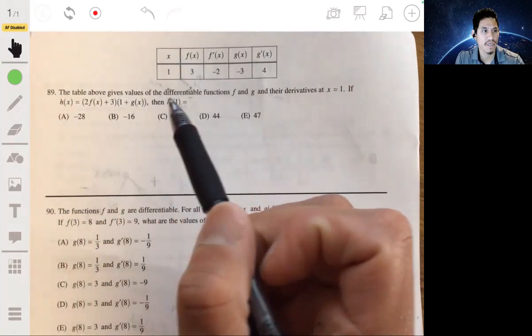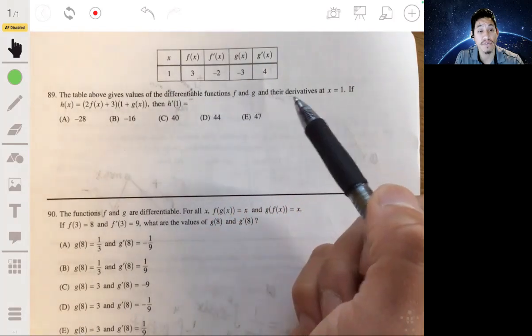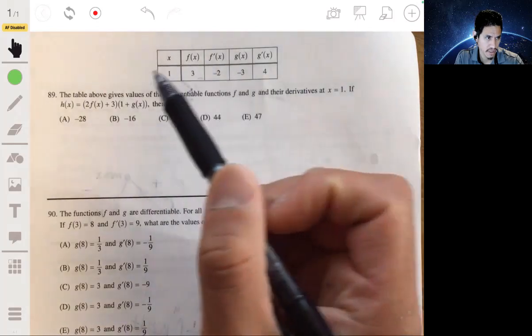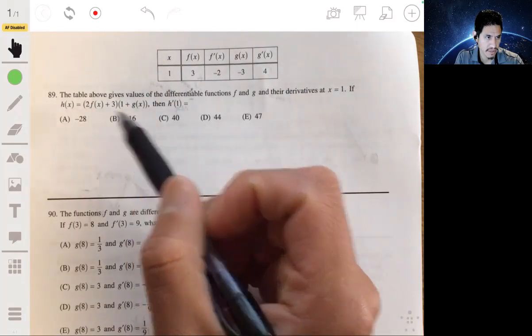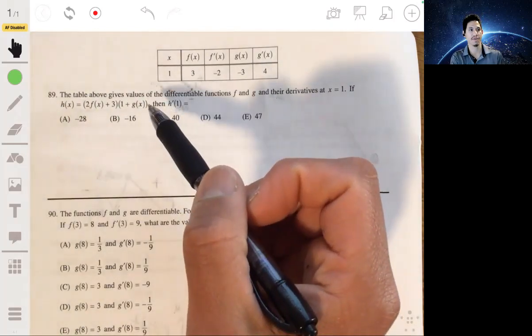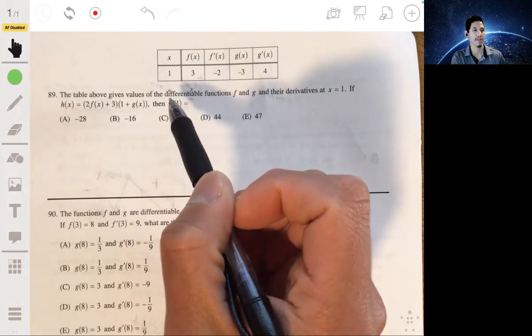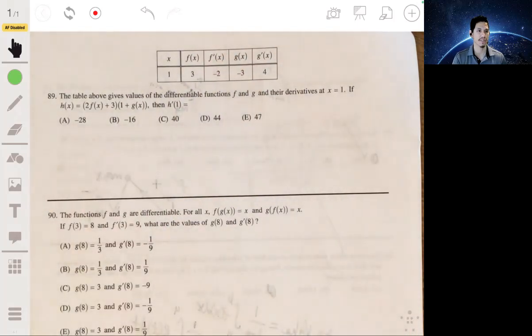Alright, problem 89. We have this table that gives the values of the differentiable functions f and g and their derivatives at x equals 1, and we're given that h of x equals this whole thing. I'm not going to read it out just because I feel sometimes it makes it more confusing, but h of x equals this, then h prime of 1 equals... Okay, so here's the strategy.